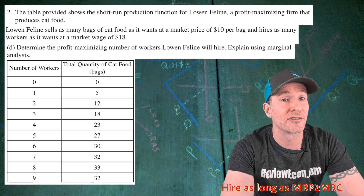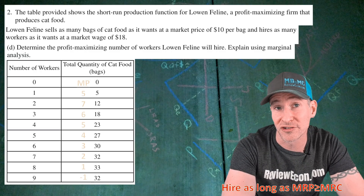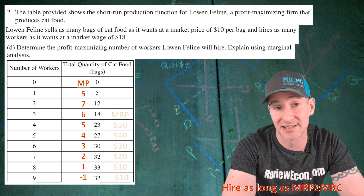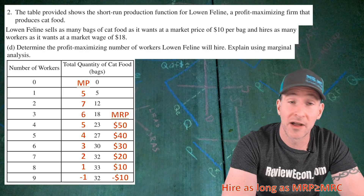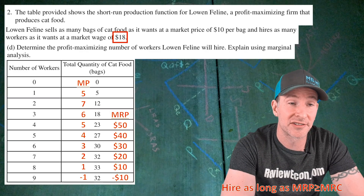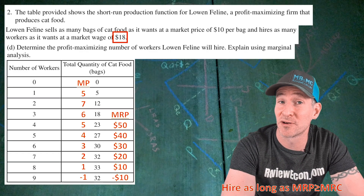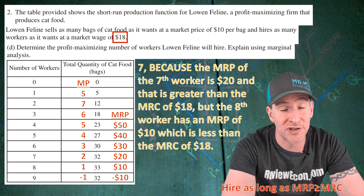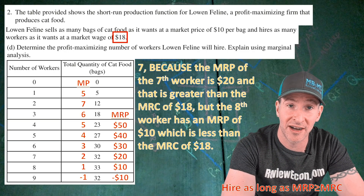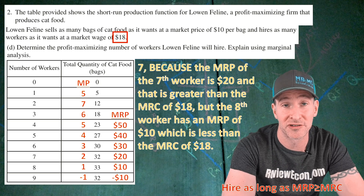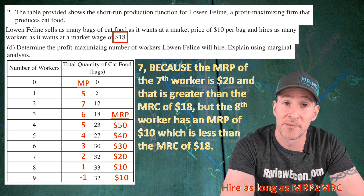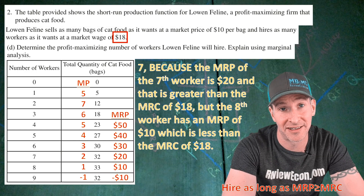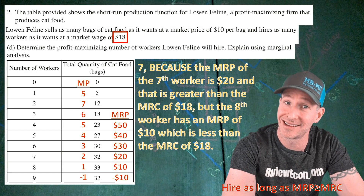First, to calculate the marginal revenue product, we find the marginal product and then multiply it by the price of $10. That gives us the column of marginal revenue product. Our wage is $18. Looking at the table, that means we're going to hire seven workers. Seven, because the marginal revenue product of the seventh worker is $20, which is greater than the marginal resource cost of $18. But the marginal revenue product of the eighth worker is just $10, which is less than the marginal resource cost of $18. Say something like that and you get your next point.